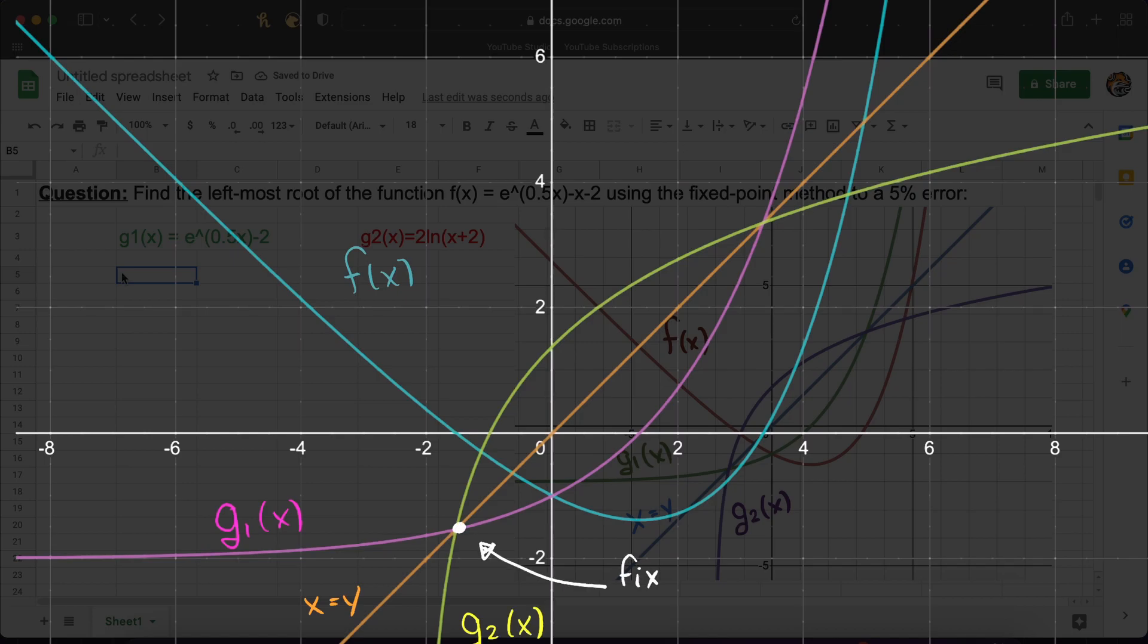We can validate this by trying a few starting guesses here. We will always diverge as you can see here. Therefore we will advance with g.